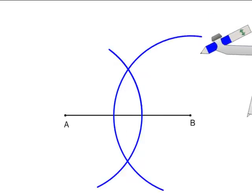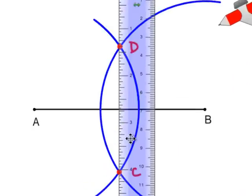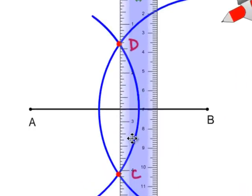Next, I'll label the two intersection points. This one I'll label C and this one I'll label D. Then, I'll use the straightedge to draw a line connecting the intersection points.